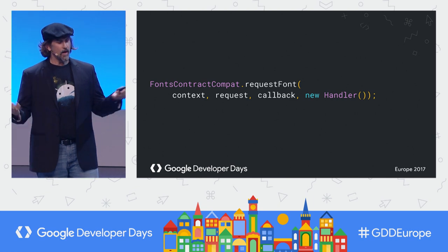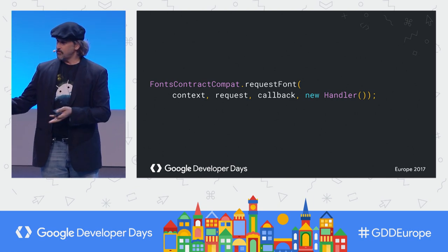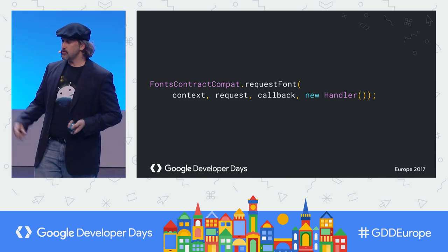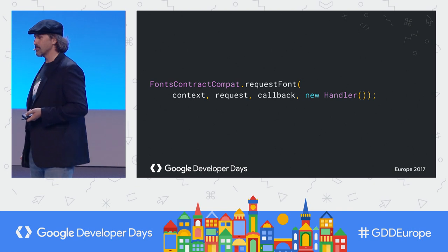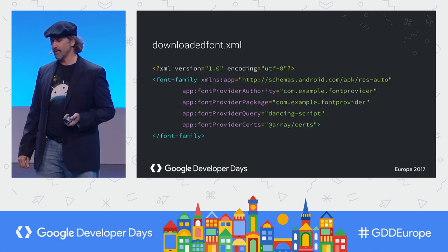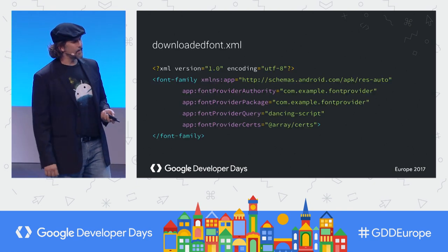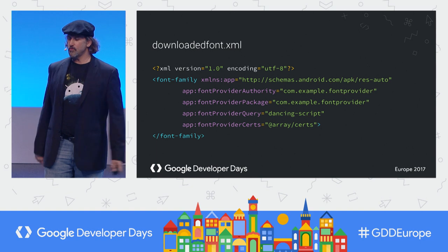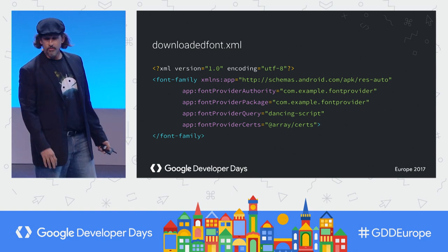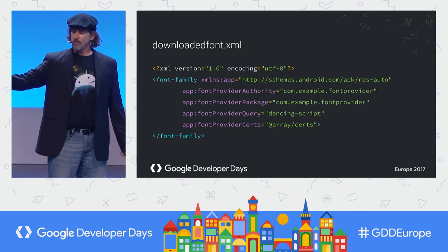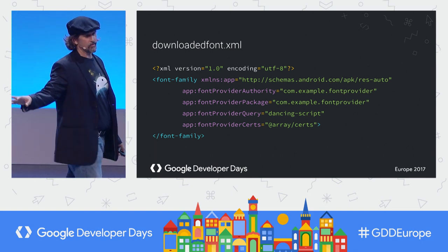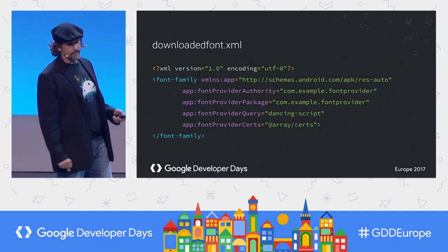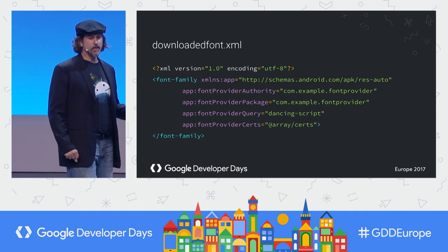You use fonts-contract-compat and you control what thread this runs on, so don't run it on a UI thread. You can also throw it into XML, which is really easy to use. The certs is actually a string array.